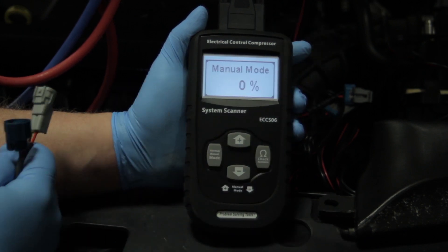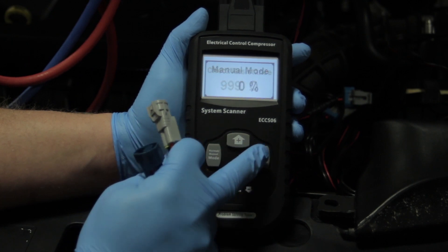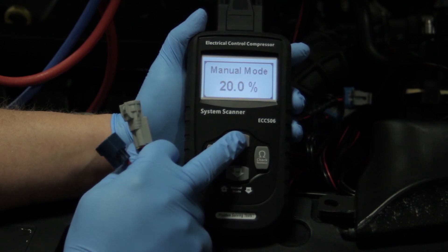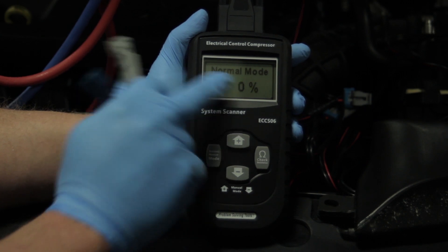What that's going to allow me to do is a resistance check on that particular solenoid, and it's going to allow me to command the solenoid myself, and return it back to normal mode to see what the ECM is actually commanding.